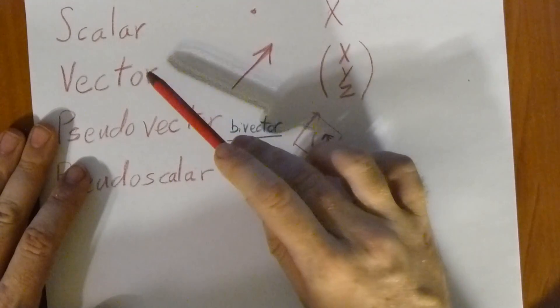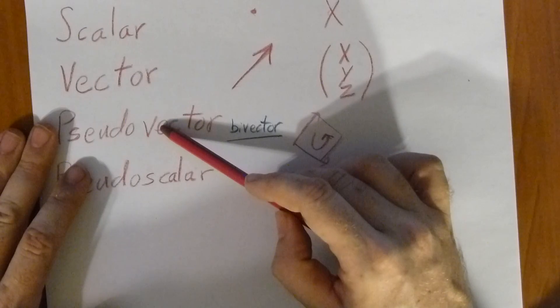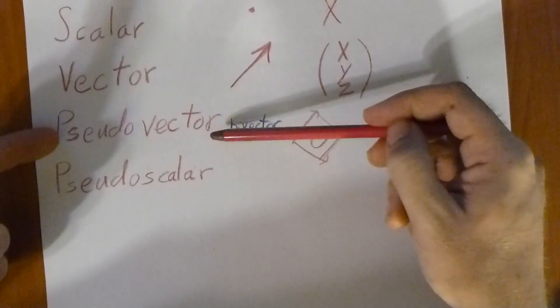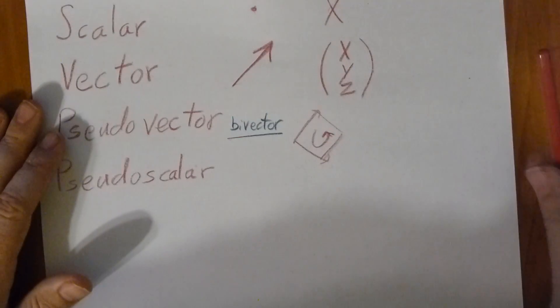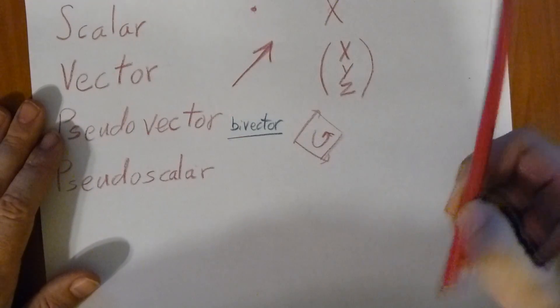Now, how can you tell which is a vector and what's a pseudovector? Do they act different? Well, you can add vectors to vectors and pseudovectors to pseudovectors, but you can't add them to each other because they act different.